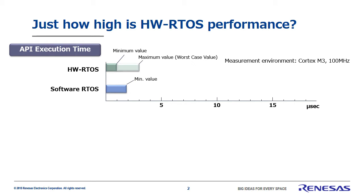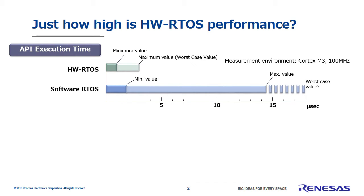For the software real-time OS, however, the minimum time was 1.9 microseconds and the maximum was 14.4 microseconds. The software real-time OS's maximum execution time here is only the maximum value produced by this test program. In a real-use environment, we have no way of knowing the worst case performance values.